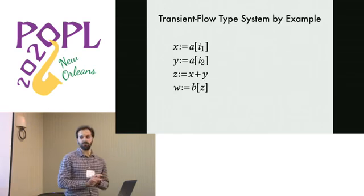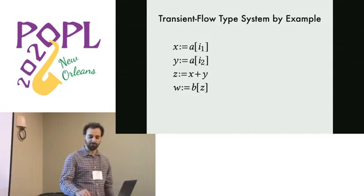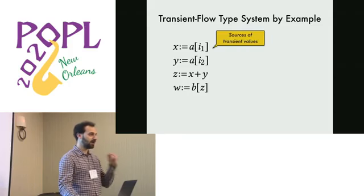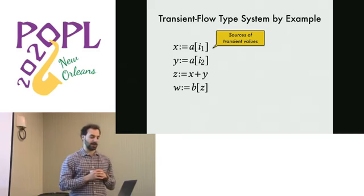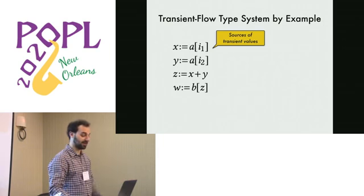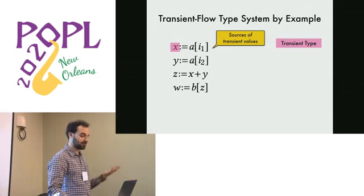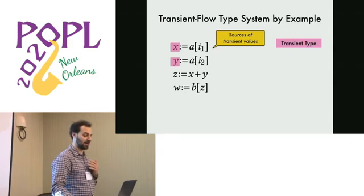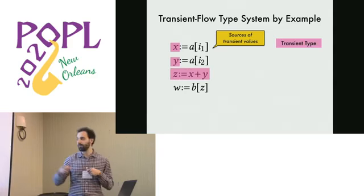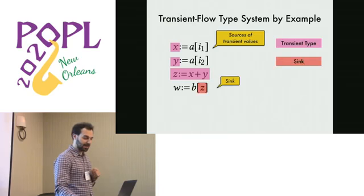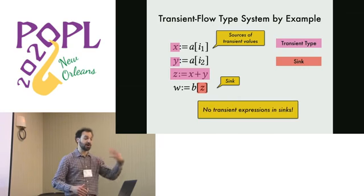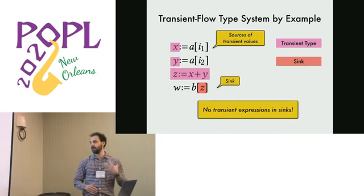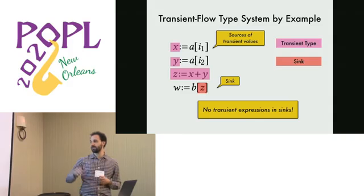Let me give you a brief overview of how our type system works. Array loads in our type system represent sources of transient values. At runtime, you might read outside the boundaries of the array and this might read secret data. So our type system marks this as a transient type and it propagates transient types throughout the program. And it looks carefully at sinks and our type system rejects programs where transient expressions with the transient types flow to a sink.